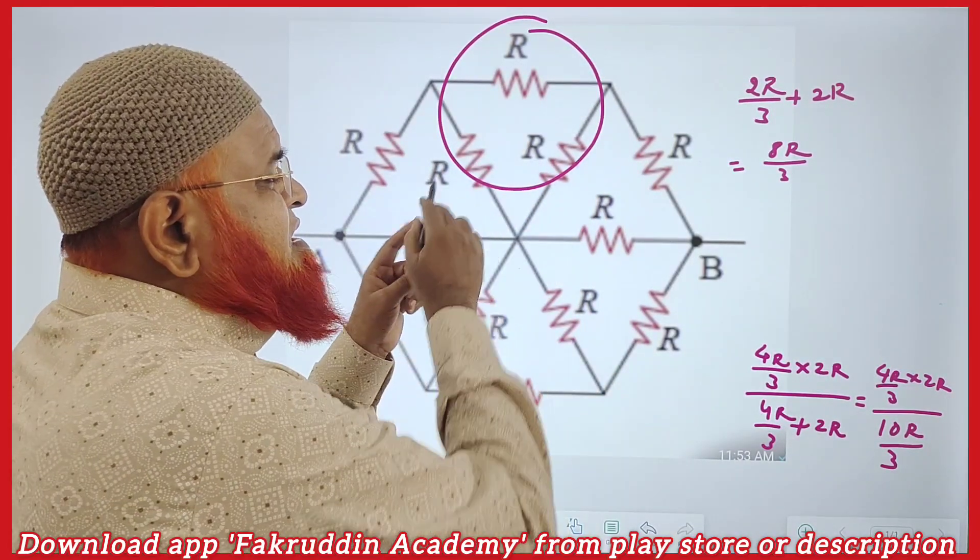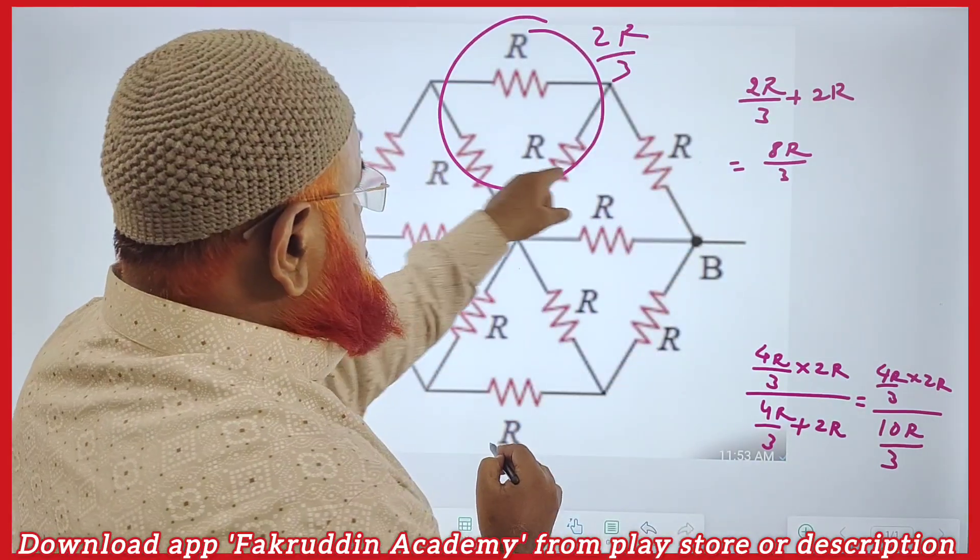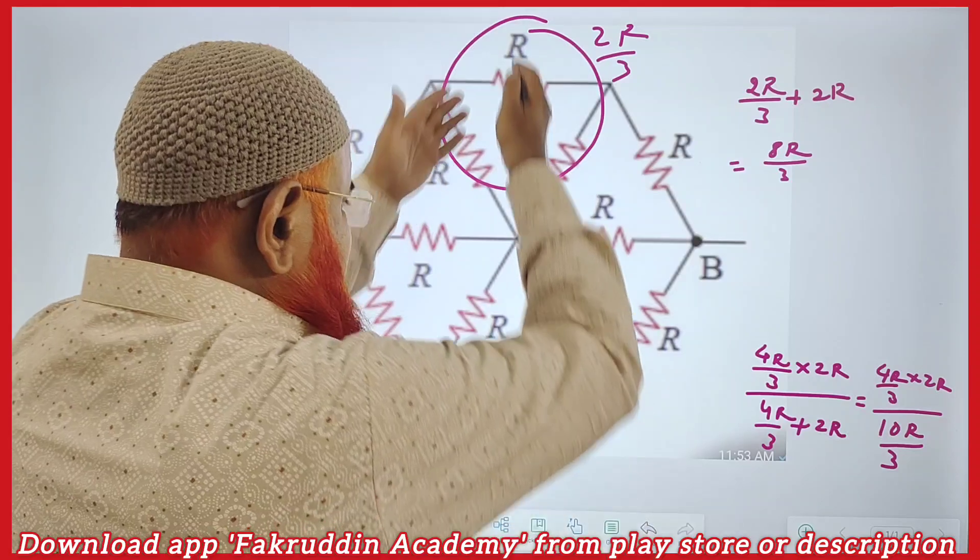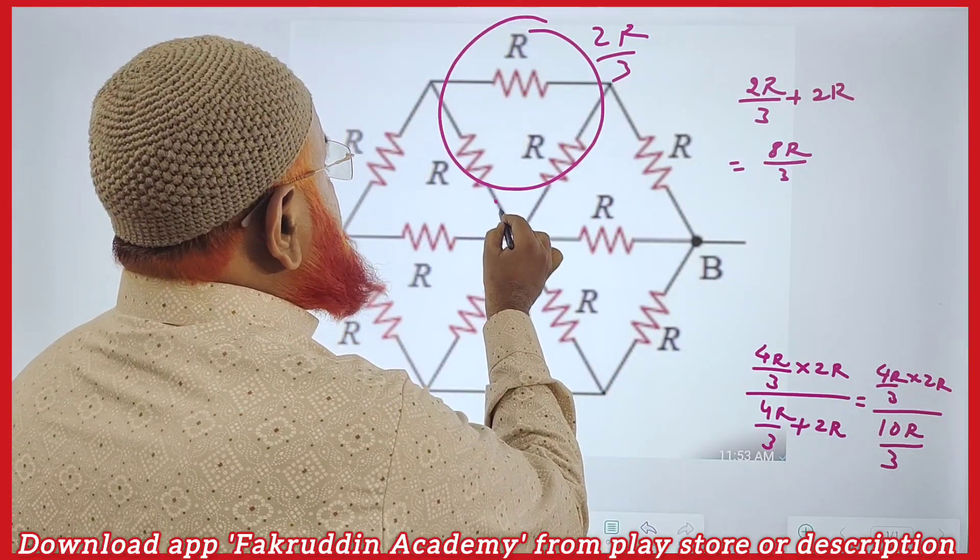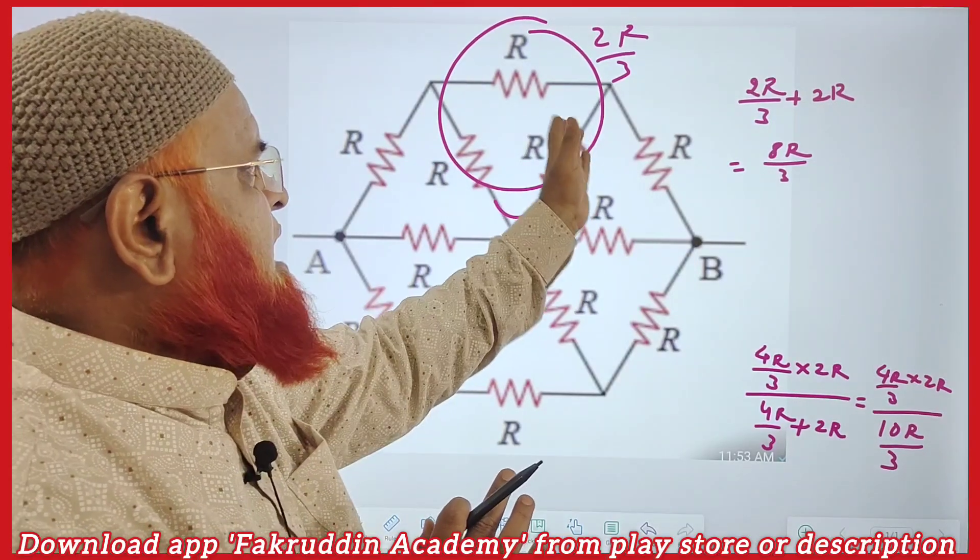is having the answer as 2R by 3, because this is 2R and this is R. As this is a symmetrical figure, we will cut this connection here, and there is nothing here. So this is 2R and